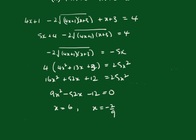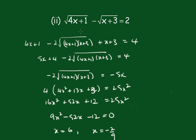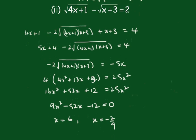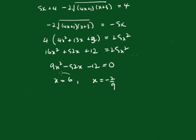But this time when you put the 6 back in, you get square root of 25 minus square root of 9, which is in fact the correct answer. So this time x equals 6 is the solution.